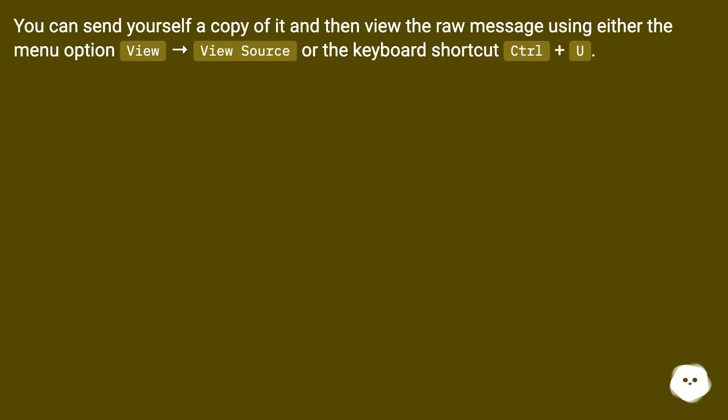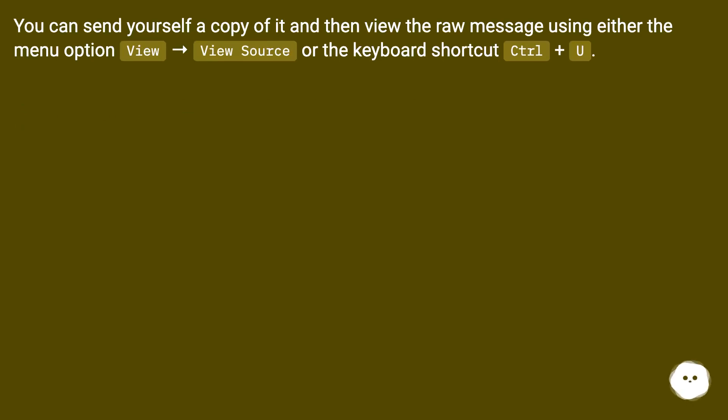You can send yourself a copy of it and then view the raw message, using either the menu option View > View Source, or the keyboard shortcut Ctrl+U.